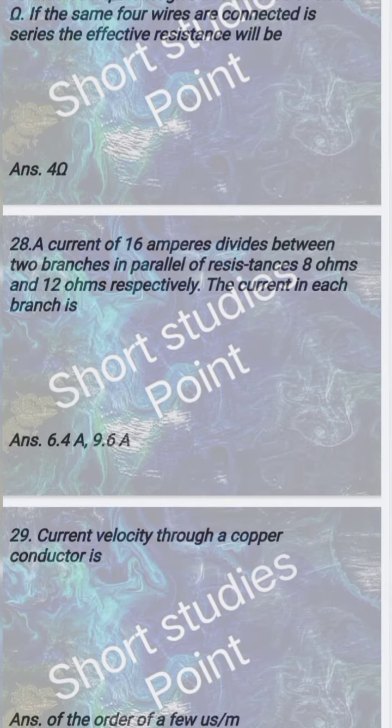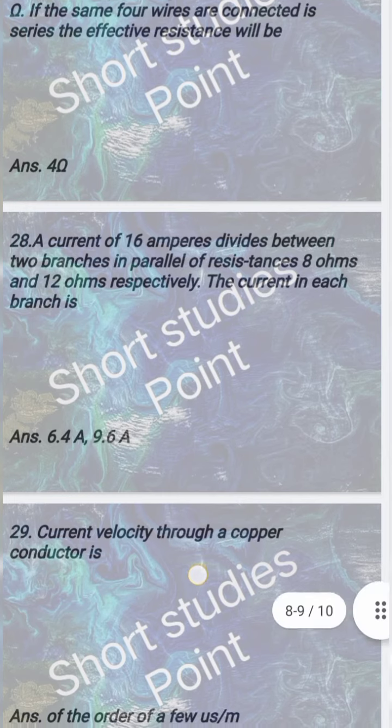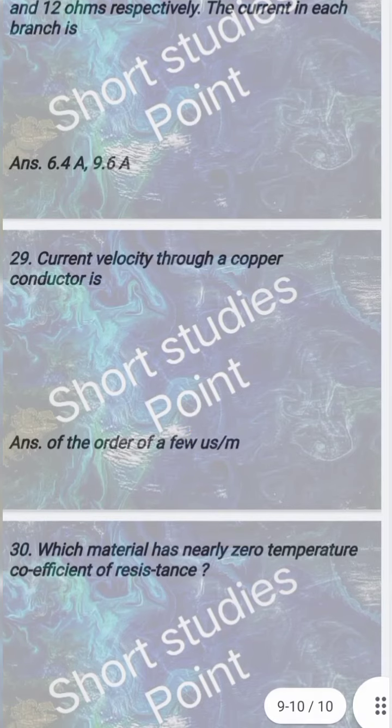A current of 16 ampere divides into two branches in parallel of resistance 8 ohm and 12 ohm respectively. The current in each branch is 6.4 ampere and 9.6 ampere.